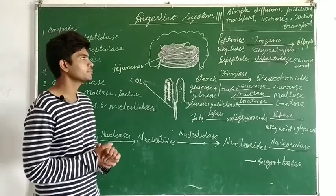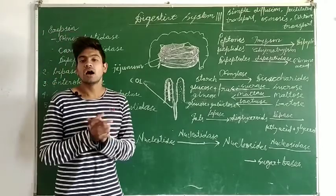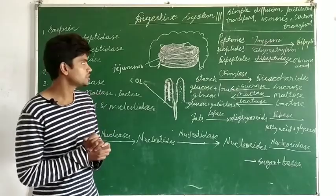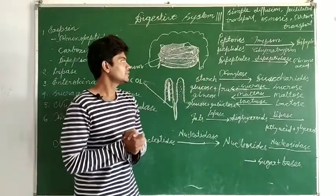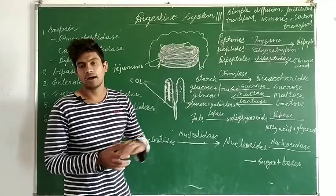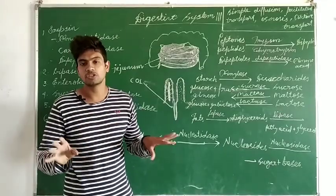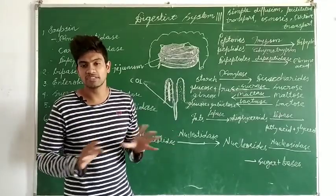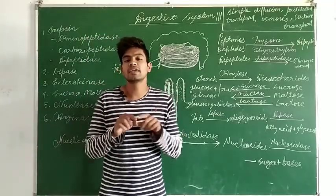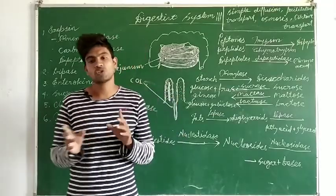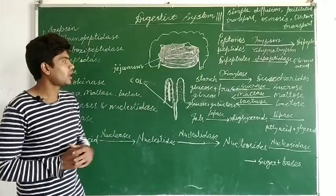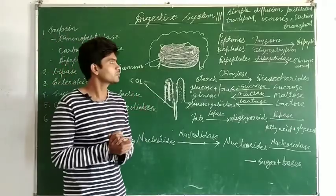After digestion, we will see how absorption takes place in the jejunum. The villi are found throughout the small intestine, and their purpose is to increase the surface area for absorption.